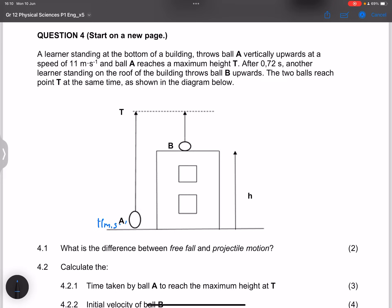They say the ball reaches a maximum height T. After 0.72 seconds, another learner standing on the roof of the building throws ball B upwards. The two balls reach point T at the same time as shown in the diagram below.